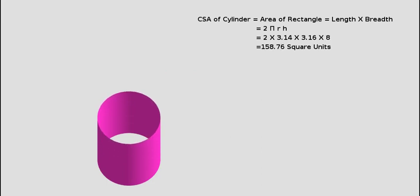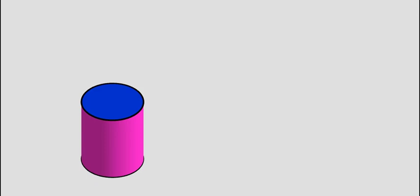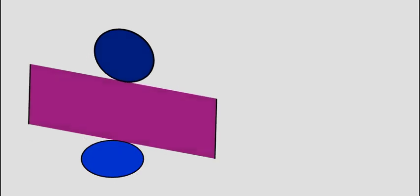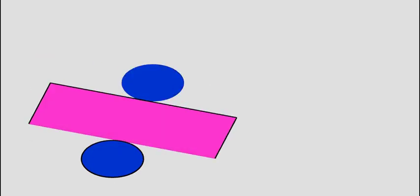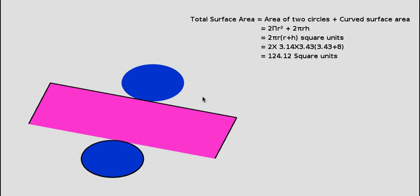To find the total surface area of a right circular cylinder, we need to add the areas of two congruent circular ends with curved surface area. Therefore, the total surface area of a cylinder is equal to 2 pi r square plus 2 pi r h, that is equal to 2 pi r into r plus h square units. Observe, as the radius and height changes, TSA also changes.